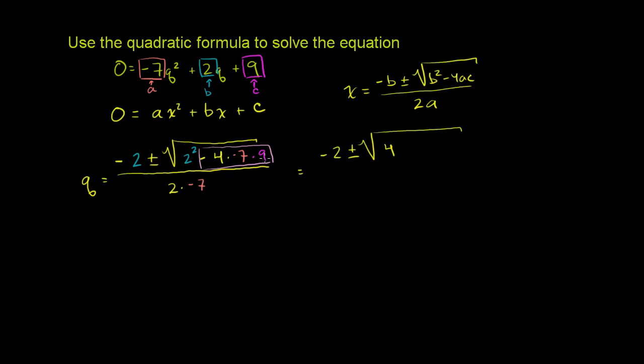4 times 7 times 9: 4 times 9 is 36, 36 times 7—7 times 6 is 42, 7 times 3 is 21, plus 4 is 25—252. So this becomes 4 plus 252. The negative 7 and the minus out front cancel out, that's why we have positive 252. And our denominator: 2 times negative 7 is negative 14.